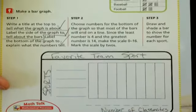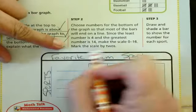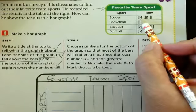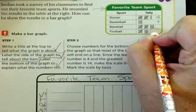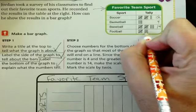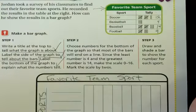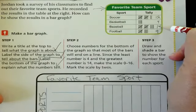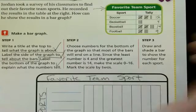Choose numbers for the bottom of the graph so that most of the bars will end on a line. Since the least number is four and the greatest number is 14, make the scale zero to 16. Mark the scale by twos. So they looked at their tally chart and they said, okay, we have 5, 10, 11, 12, 4, 5, 10, 11, 12, 13, 14, 5, 6, 7, 8, 9. Most of my numbers are even, so I can count by twos to have a shorter line fits in a smaller space. My numbers, the smallest one is 4, the largest one is 14. So I know my graph needs to go a little bit above 14. And it should start at zero just because that makes the most sense.